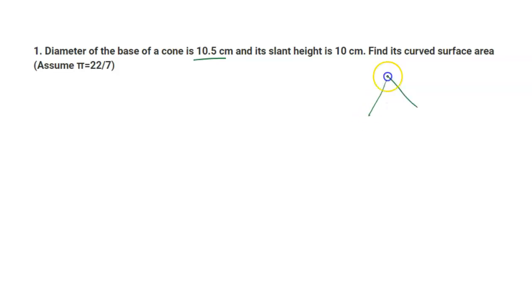So here is a cone and its diameter is this, and your diameter equals 10.5 centimeters. So the radius is half of diameter, which is 10.5 upon 2, which equals 5.25 centimeters.